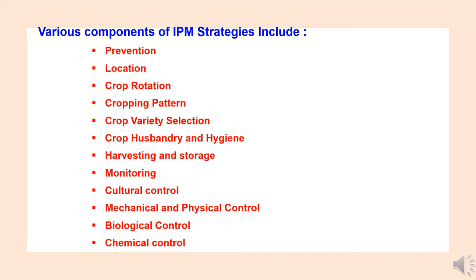There are various components of integrated pest management IPM strategies which we will study here. These components can be described as: prevention, location, crop rotation, cropping pattern, crop variety selection, crop husbandry and hygiene, harvesting and storage, monitoring, cultural control, mechanical and physical control, biological control, and chemical control. We will study about details in each component.